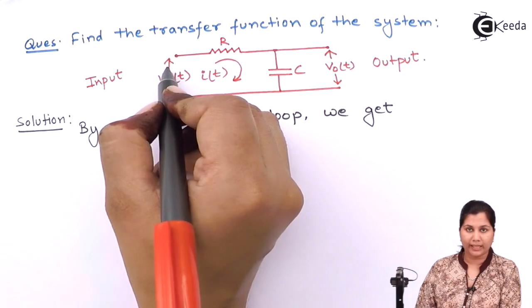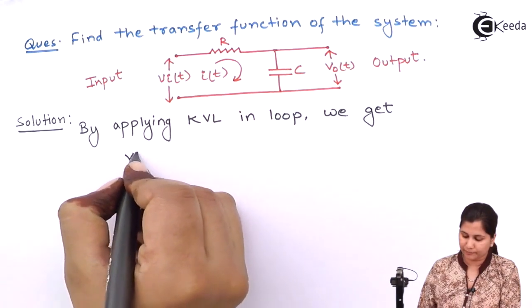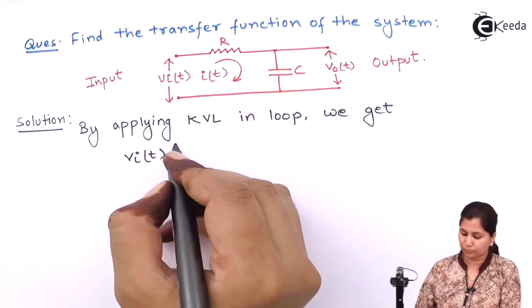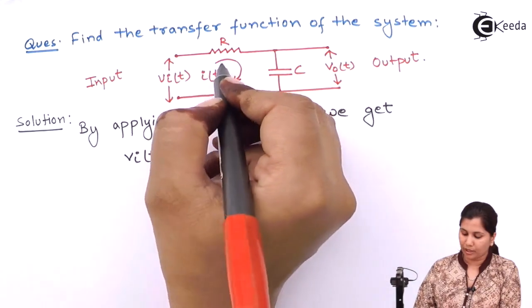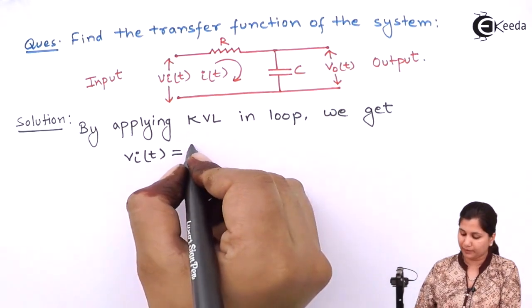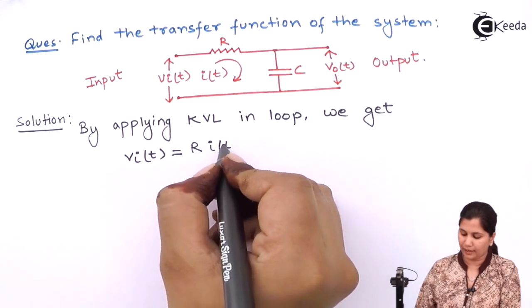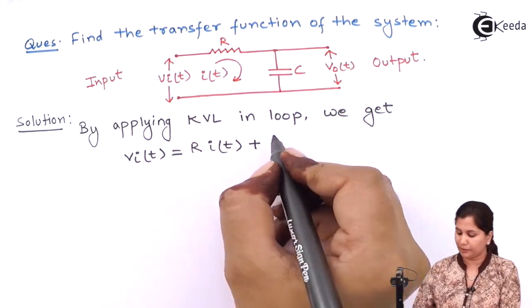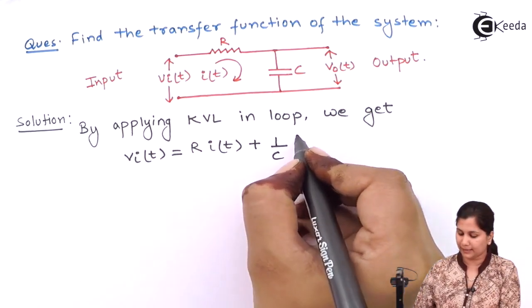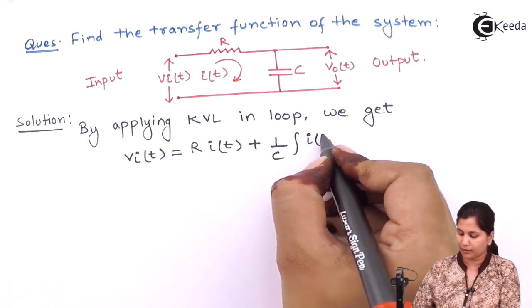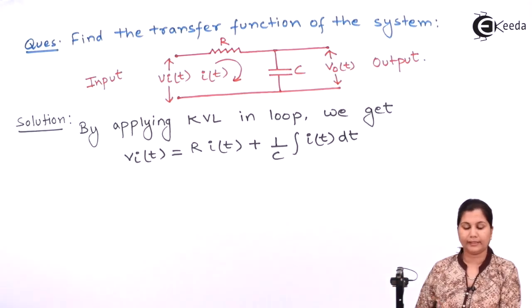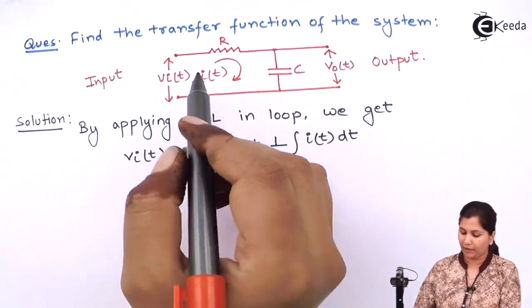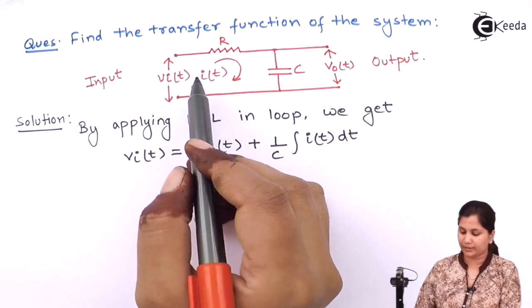We have VIT as the input voltage. This input voltage will be equal to the voltage drop across the resistance, RIT, plus the voltage drop across the capacitor, 1 by C integration of IT DT. This is the KVL equation which we have obtained by applying it in the loop.